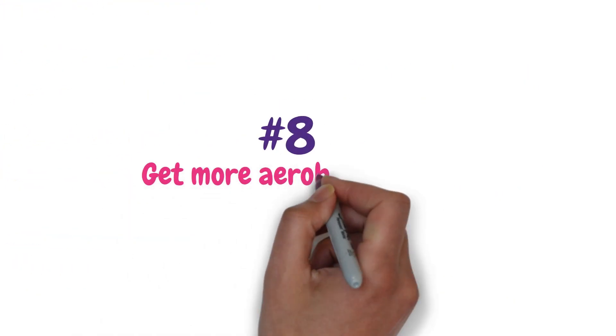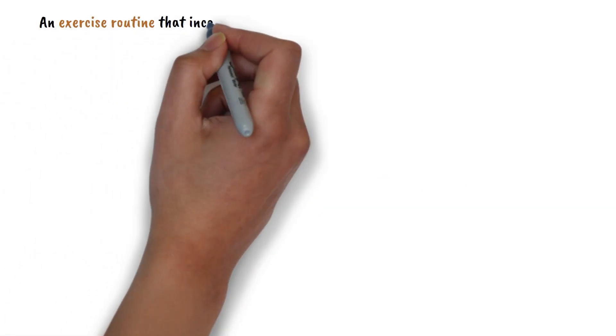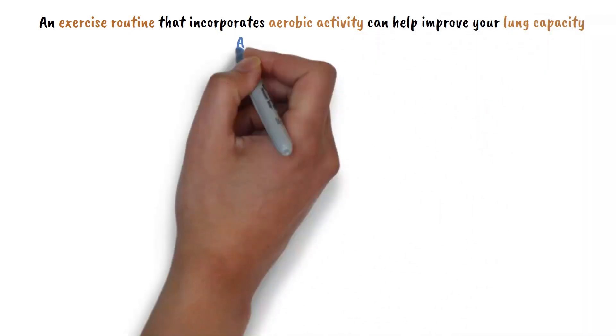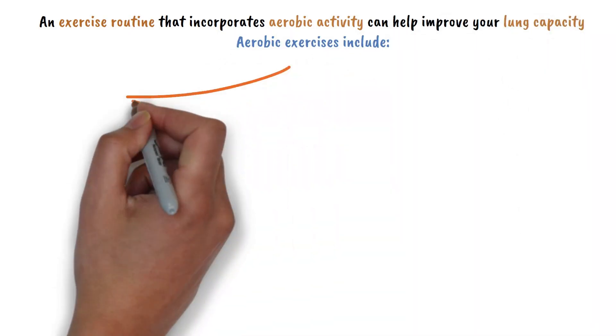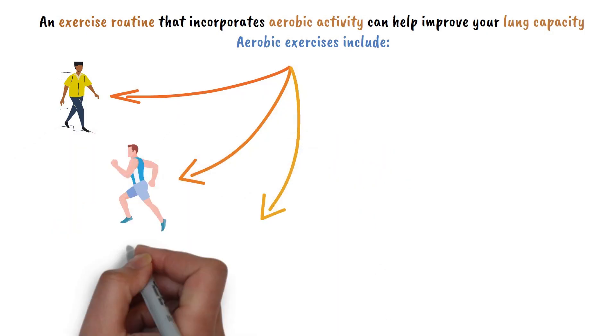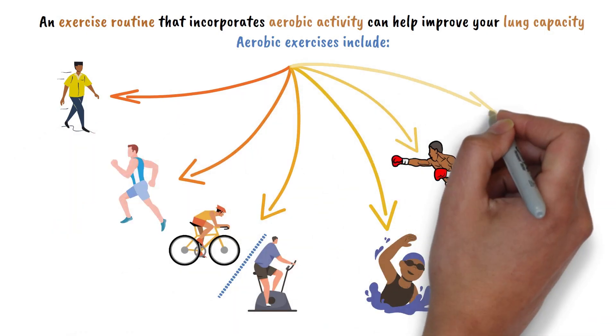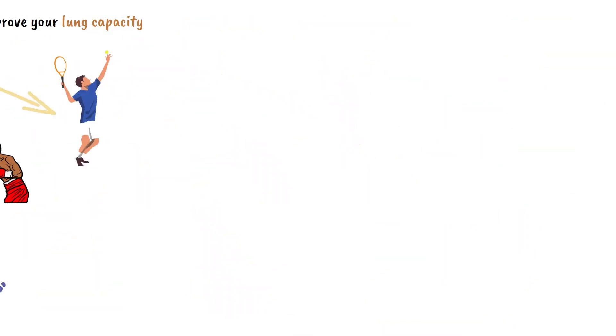The eighth way of cleansing our lungs is by getting more aerobic exercise. An exercise routine that incorporates aerobic activity can help improve your lung capacity. Aerobic exercises include walking, running, cycling, whether outdoors or indoors, swimming, boxing, sports such as tennis.